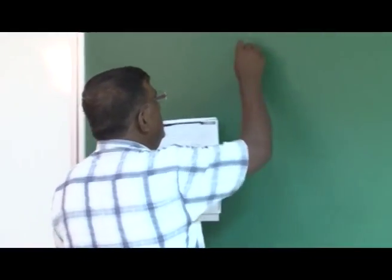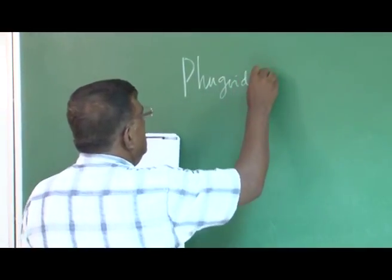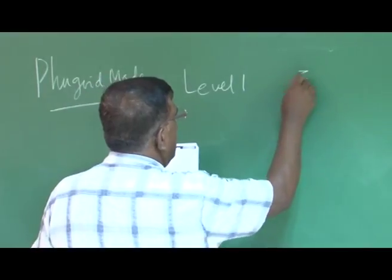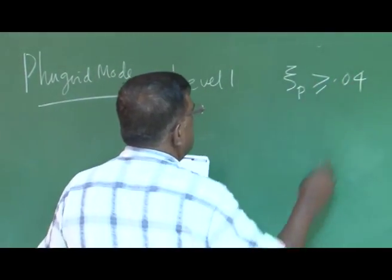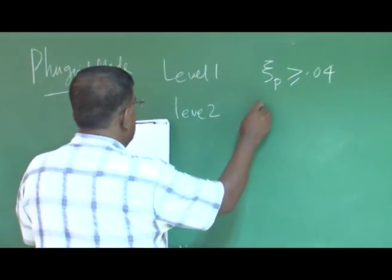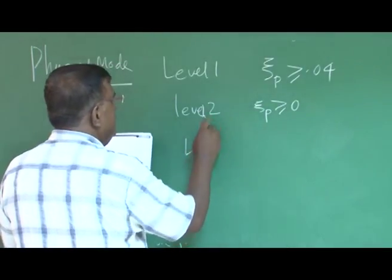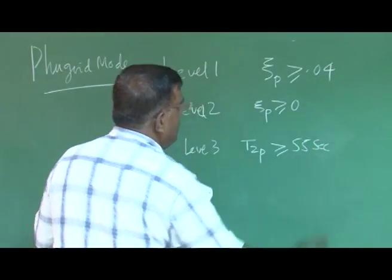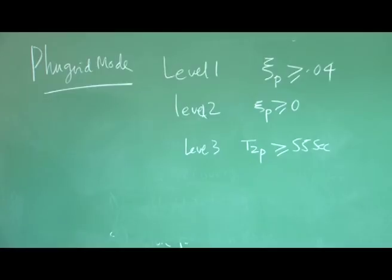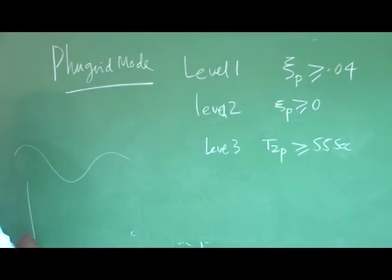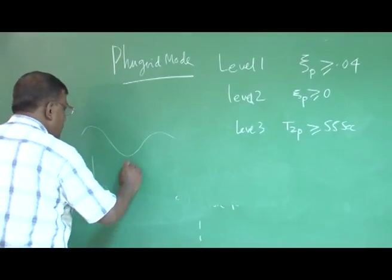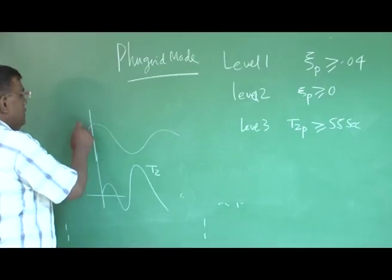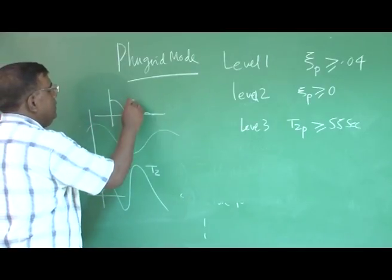We will give some representative numbers. If we take phugoid mode, the requirement for level 1 qualities is that zeta_phugoid must be greater than or equal to 0.04. For level 2, zeta_p must be greater than or equal to 0. And for level 3, time to double for phugoid must be greater than 55 seconds.